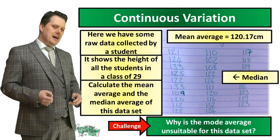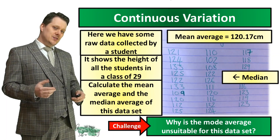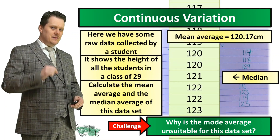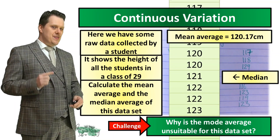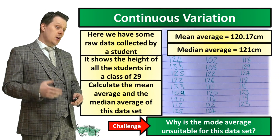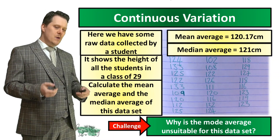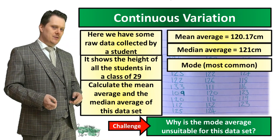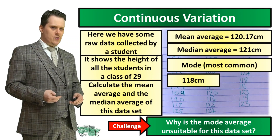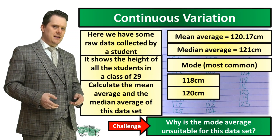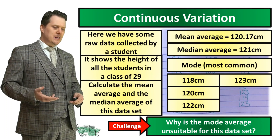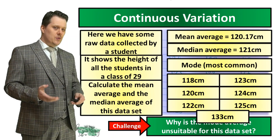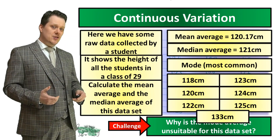Next we find the median average. To do this, put all your data in numerical order and find the number in the middle. Our median for this data set is 121. For the challenge question — why is the mode average unsuitable? The mode is the most common value, but in this data set we have two lots each of 118, 120, 122, 123, 124, 125, and 133. So the mode isn't suitable because there are actually seven modes.